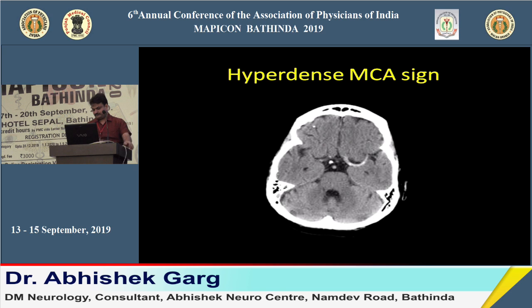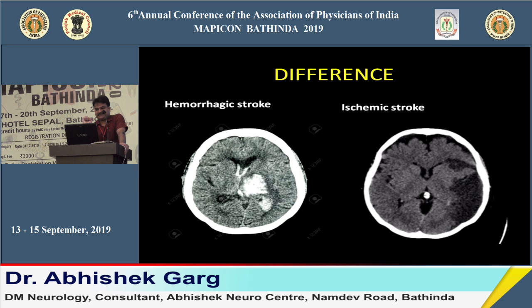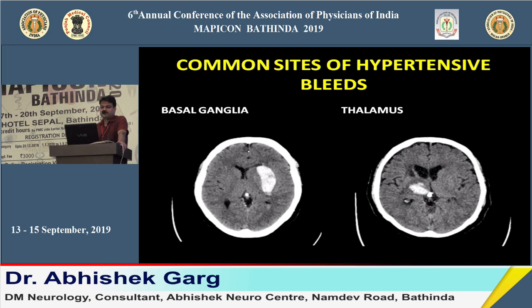On CT, hemorrhage appears bright (hyperdense) and ischemia appears hypodense. If CT shows hyperdensity, we are sure the patient has hemorrhagic stroke and treatment is focused accordingly. If CT shows hypodensity or is normal, our suspicion should be towards ischemic etiology.